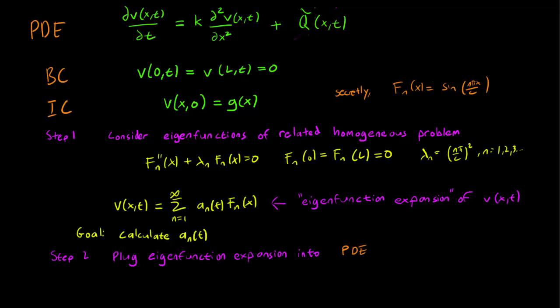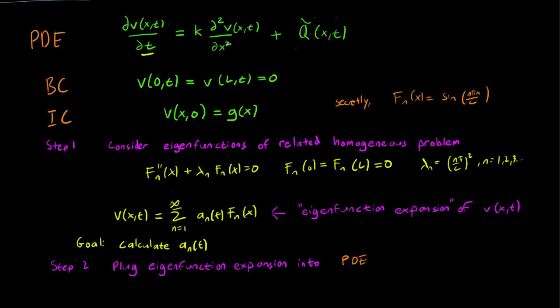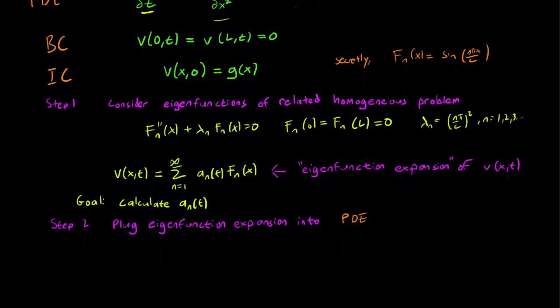To do that, we have to plug our eigenfunction expansion into our PDE. We'll need to take the t-derivative and the double x-derivative. We first take the t-derivative of both sides of the eigenfunction expansion. Note that F_n(x) isn't affected since it doesn't depend on t.